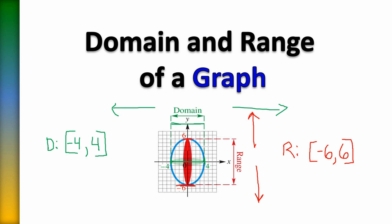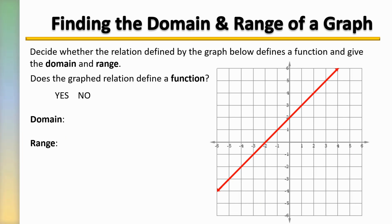Now let's try that on other types of graphs. We're asked to decide whether the relation defined by the graph below defines a function, and to give the domain and range. First, is this a function? Recall the vertical line test — all you have to do is draw or imagine a vertical line, and if it only touches the graph in one point, then it is a function. Yes, it is a function — no matter how many times you draw a vertical line through this graph, it only intersects in one place.